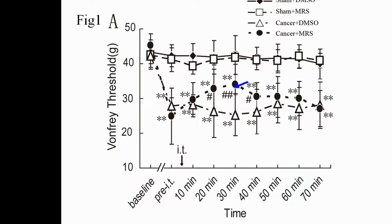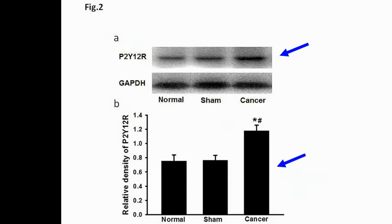The P2Y12 receptor began to increase at day 20, reached a peak at day 30, and lasted until day 60, indicating a transient inhibitory action. We collected L4 to L6 segments of the spinal dorsal horn samples and performed western blot and immunohistochemistry analysis. The bands show that the expression of P2Y12 receptor increased in the bone cancer series, suggesting that CIBP leads to a significant increase of P2Y12 receptor expression.